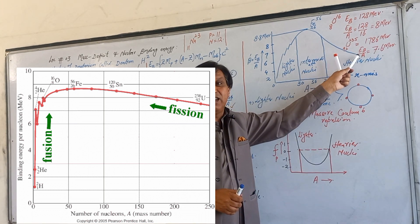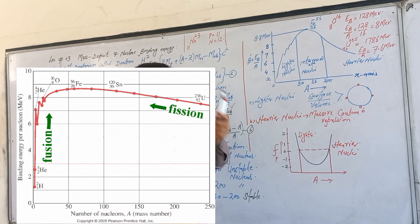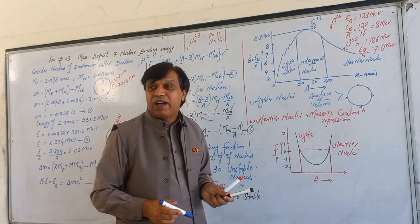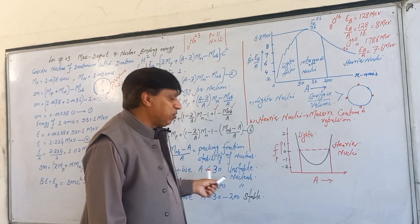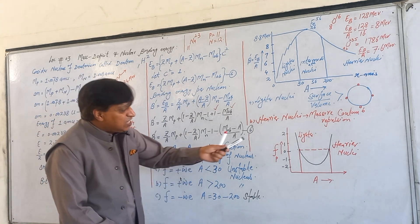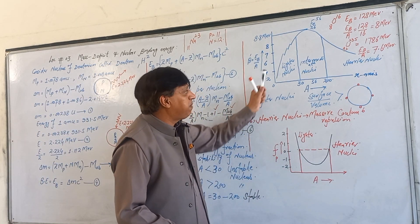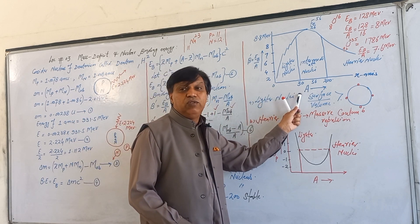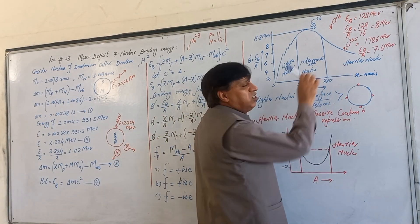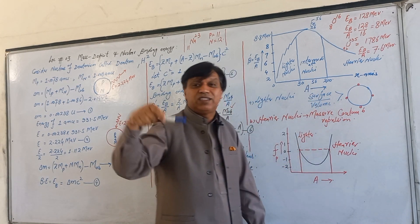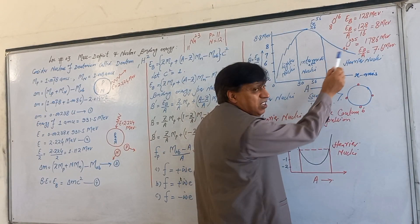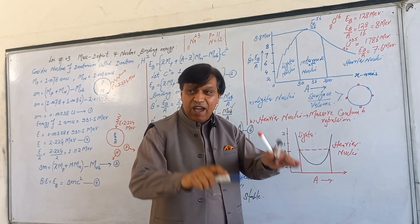After reaching its maximum value, binding energy per nucleon decreases significantly. The graph has three distinct regions based on mass number: the region for mass number less than 30 (lighter nuclei), the intermediate region from 30 to 200, and the region for mass number greater than 200 (extremely heavy nuclei). Light nuclei and heavy nuclei both show lower binding energy per nucleon.